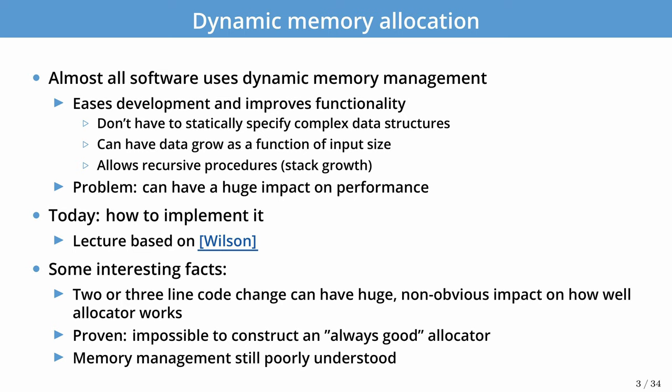Almost all software uses dynamic memory allocation because it eases development and often improves functionality. For example, we don't have to statically specify complex data structures, and we can have data grow as a function of input size. The problem is that dynamic memory allocation can have a huge impact on performance. Some of the highest performing server applications are designed to eliminate memory allocation in the critical code paths to maximize performance. Today we'll focus on implementation techniques and the trade-offs that will help you understand performance problems with dynamic memory allocation in your applications.